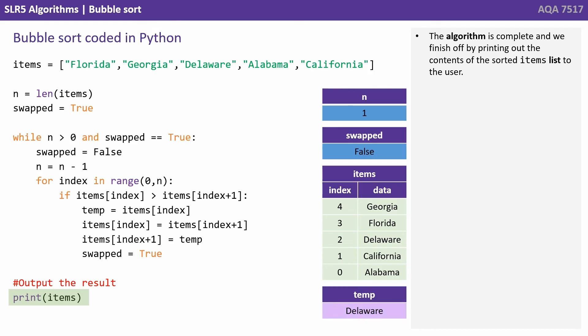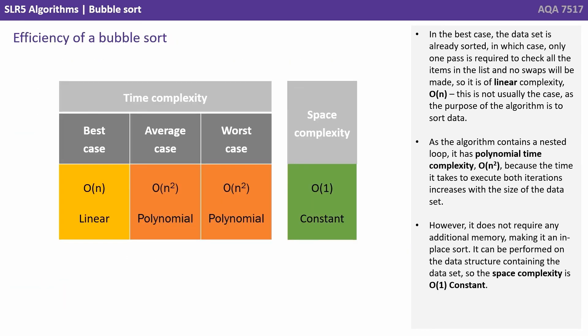The algorithm is complete, and we finish off by printing out the contents of the sorted items list to the user. So what is the efficiency of a bubble sort? In the best case, the data set is already sorted, in which case only one pass is required to check all the items in the list and no swaps will be made. So it's of a linear complexity — O(n).